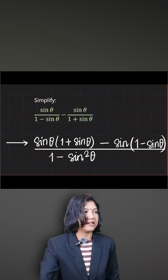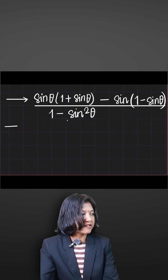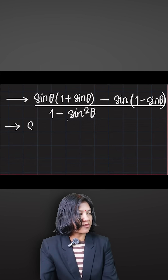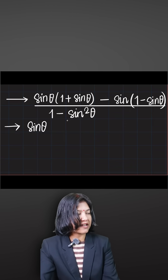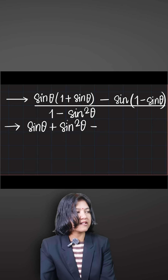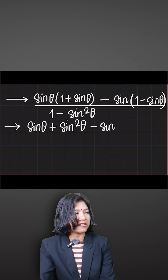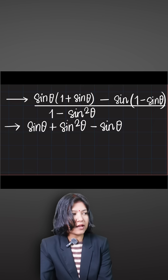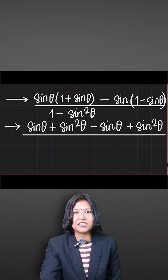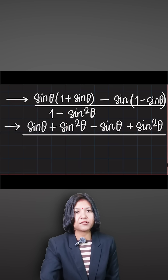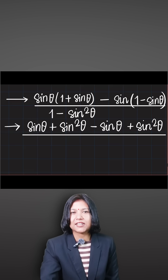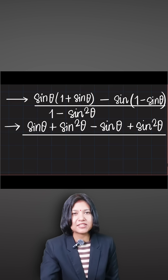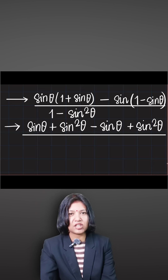Keep the common denominator. Now simplify the numerator: sinθ × 1 = sinθ, sinθ × sinθ = sin²θ. Then minus sinθ times (1 − sinθ) gives −sinθ, and minus times minus is plus sin²θ. So the numerator becomes sinθ + sin²θ − sinθ + sin²θ.